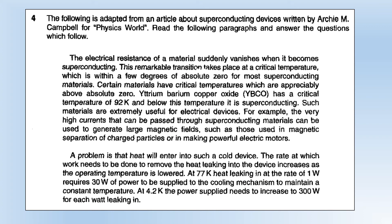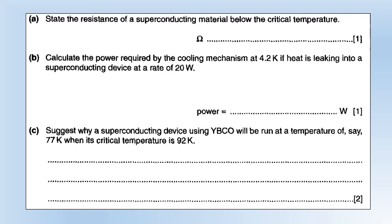Moving on to the last question about superconductors from a Physics World article. The resistance of a superconducting material below the critical temperature is 0 — that's what superconducting means. To calculate the power required by the cooling mechanism at 4.2 Kelvin if heat is leaking in at 20 watts: for that type you need 300 watts of cooling power for every 1 watt of heat leaking in, so we need 6000 watts — 600 watts — for 20 watts of leaking.